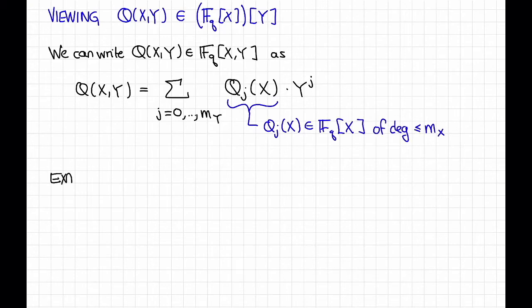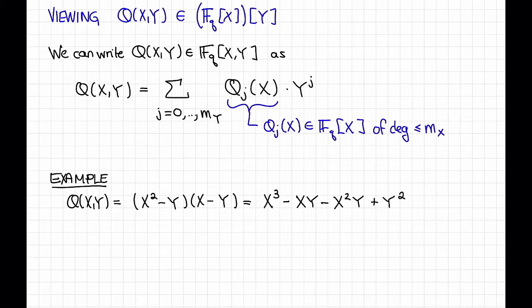As a quick example, if Q(X,Y) equals X² - (X+Y)Y, we can expand this out and get a sum of monomials. If we want, we can group together the terms according to the powers of Y to say that this equals X³ times Y⁰ plus (-X - X²) times Y¹ plus 1 times Y². These are the univariate polynomials in X that are the coefficients when viewed in this way.